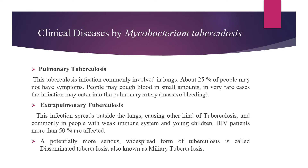Clinical diseases by Mycobacterium tuberculosis. Pulmonary tuberculosis: this infection commonly involves the lungs; above 25% of people may have no symptoms. People may cough blood in small amounts. In very rare cases, the infection may enter into the pulmonary artery, causing massive bleeding. Extra-pulmonary tuberculosis: the infection spreads outside the lungs causing other kinds of tuberculosis, commonly in people with weak immune systems and young children. HIV patients — more than 50% — are affected because of weak immune systems. A potentially more serious widespread form is disseminated tuberculosis, also known as miliary tuberculosis.